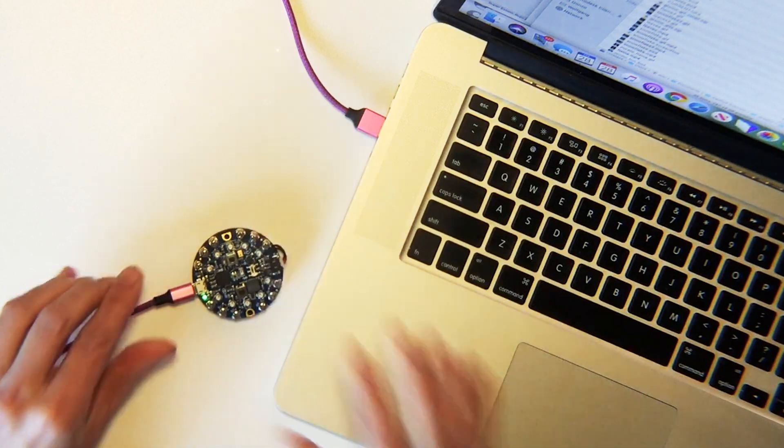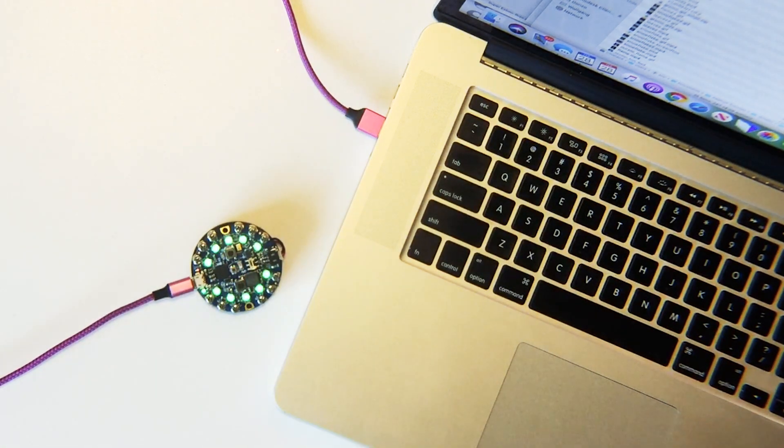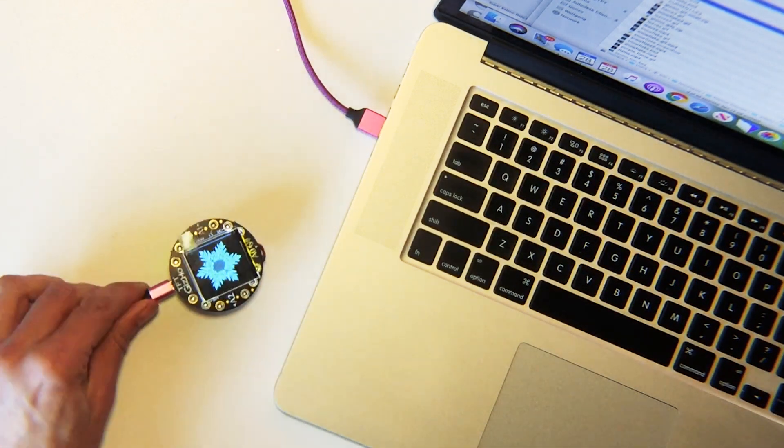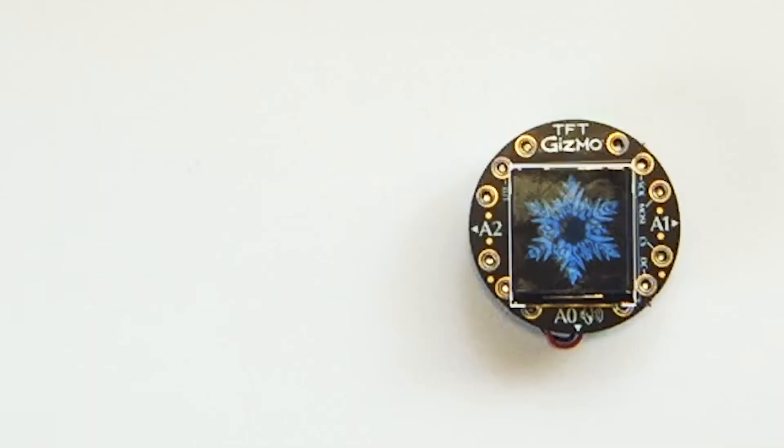Connect the Circuit Playground to your computer and double-click the reset button. Load current.uf2 onto the cplaybt boot drive, and then add the three GIF images to the root of the CircuitPi drive.